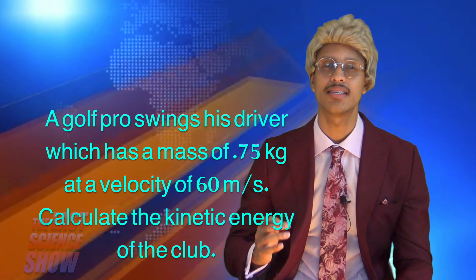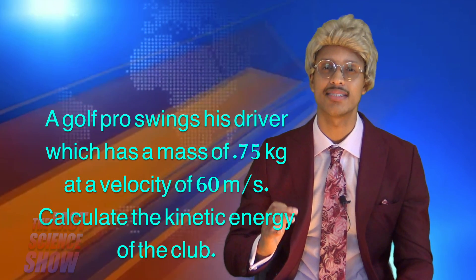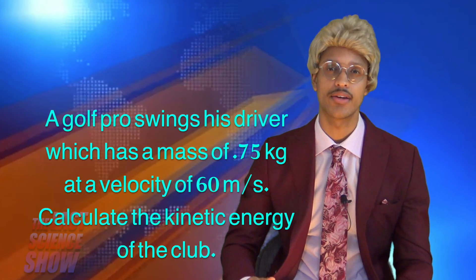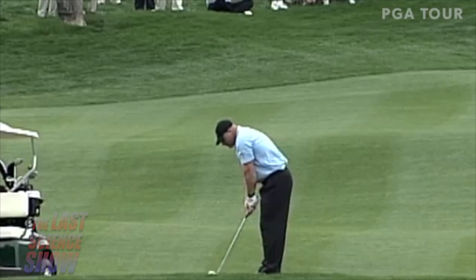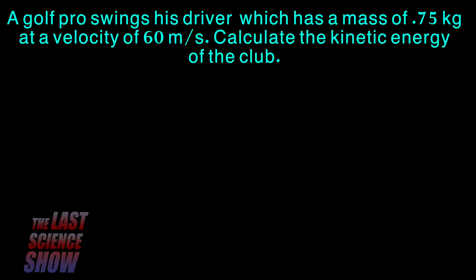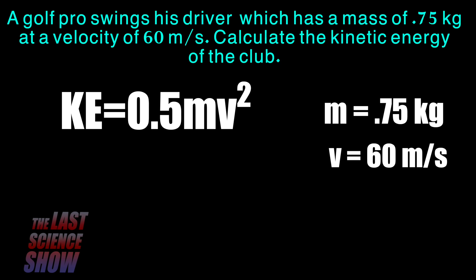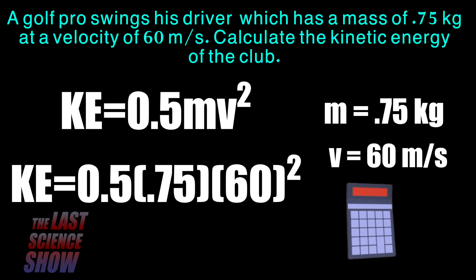A golf pro swings his driver which weighs 0.75 kilograms at a velocity of 60 meters per second. Calculate the kinetic energy of the club. We have to make sure we first identify what they're asking for — we know they're asking for the kinetic energy. They clearly show us that mass is 0.75 kilograms and velocity is 60 meters per second. When we plug that into our kinetic energy formula, we'll arrive at our answer.